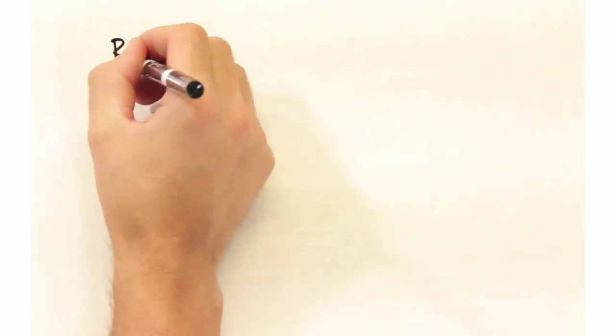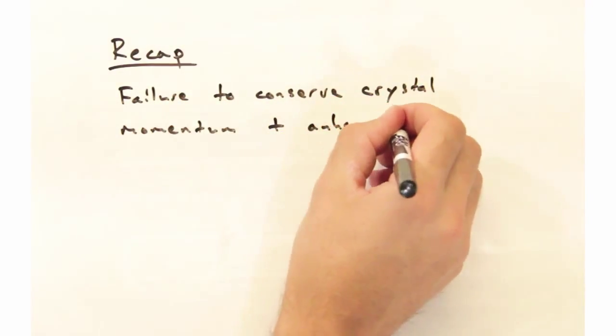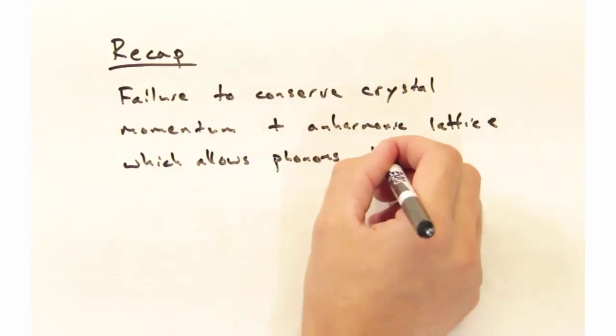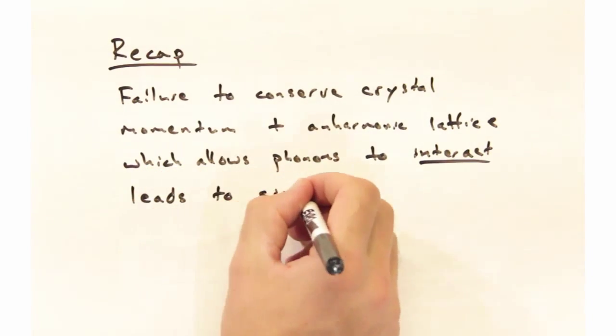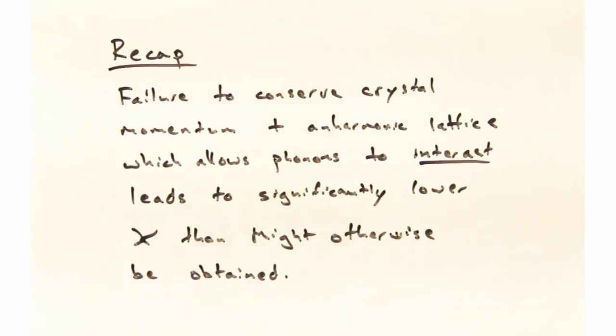To recap, what we have is a failure to conserve crystal momentum due to umklapp scattering, which is enabled by an anharmonic lattice, which allows phonons to interact, and this leads to significantly lower kappa than might otherwise be obtained if we're simply relying on imperfections to scatter phonons.